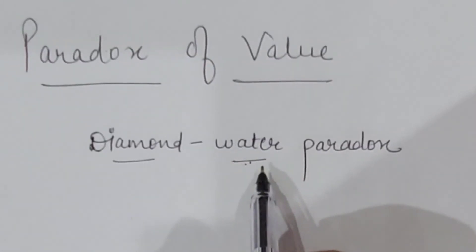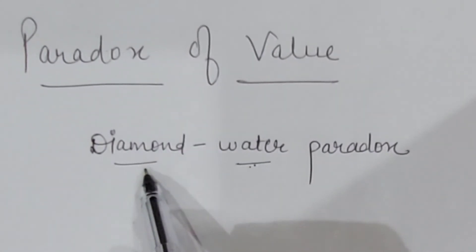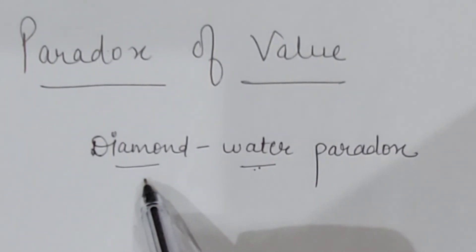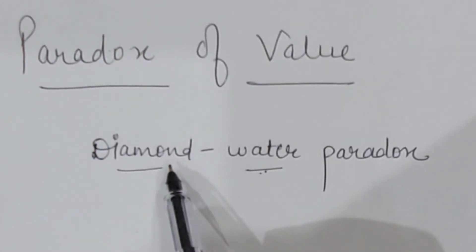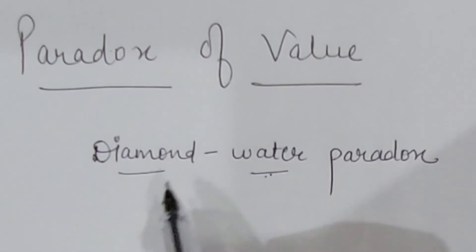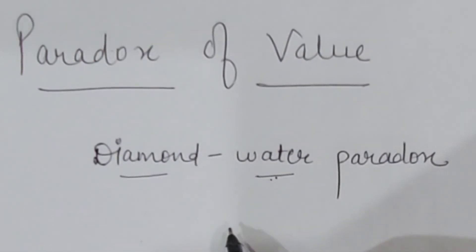On the other hand, availability of diamonds is very rare, so their total utility never reaches the point of saturation. Consequently, total utility derived from diamond is low, but their marginal utility remains high as well as positive. That is why price of diamond is higher than the water.